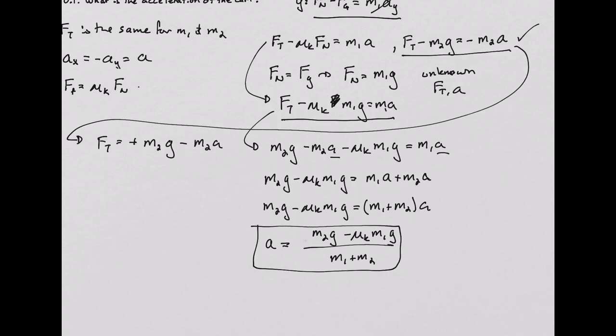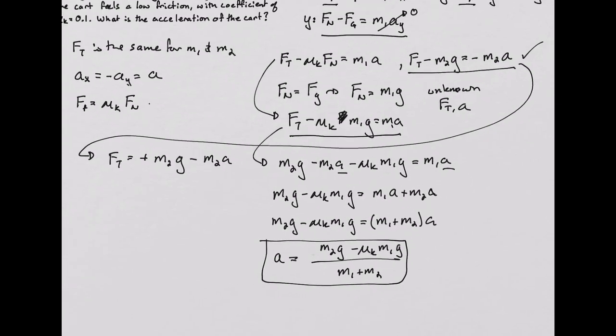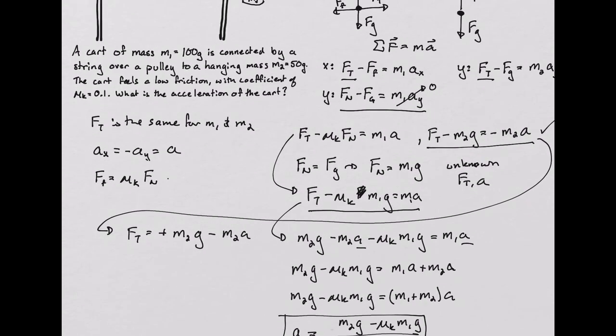At this point, all that remains is to plug in the values that we have for the problem, which are mass of 100 grams for m1, mass of 50 grams for m2, and 0.1 for the coefficient of friction.